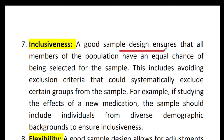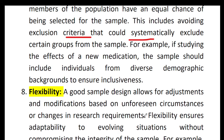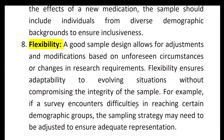The next characteristic is inclusiveness. A good sample design ensures that all members of the population have an equal chance of being selected for the sample. This includes avoiding exclusion criteria that could systematically exclude certain groups. For example, if studying the effects of a new medication, the sample should include individuals from diverse demographic backgrounds to ensure inclusiveness.